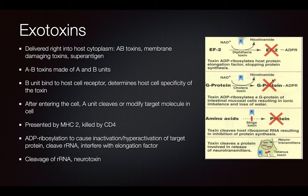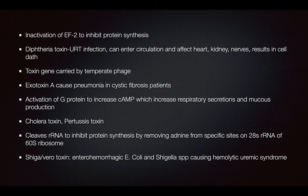Neurotoxins can cause this. The elongation factor is going to be inactivated, so there's not going to be any protein synthesis. If the G protein is cancelled, there's going to be a loss of water due to excess secretion of sodium. Amino acids are going to be prevented from being made into protein thanks to shiga toxin, which will cleave the ribosomal RNA. It's also going to cleave proteins involved in the release of neurotransmitters, such as in tetanus.